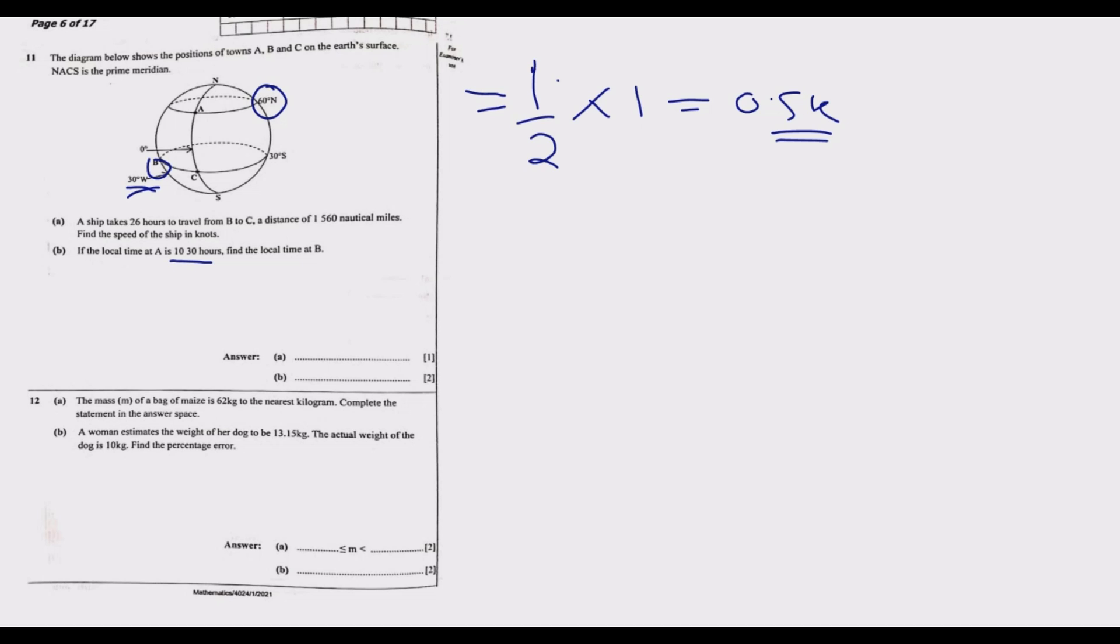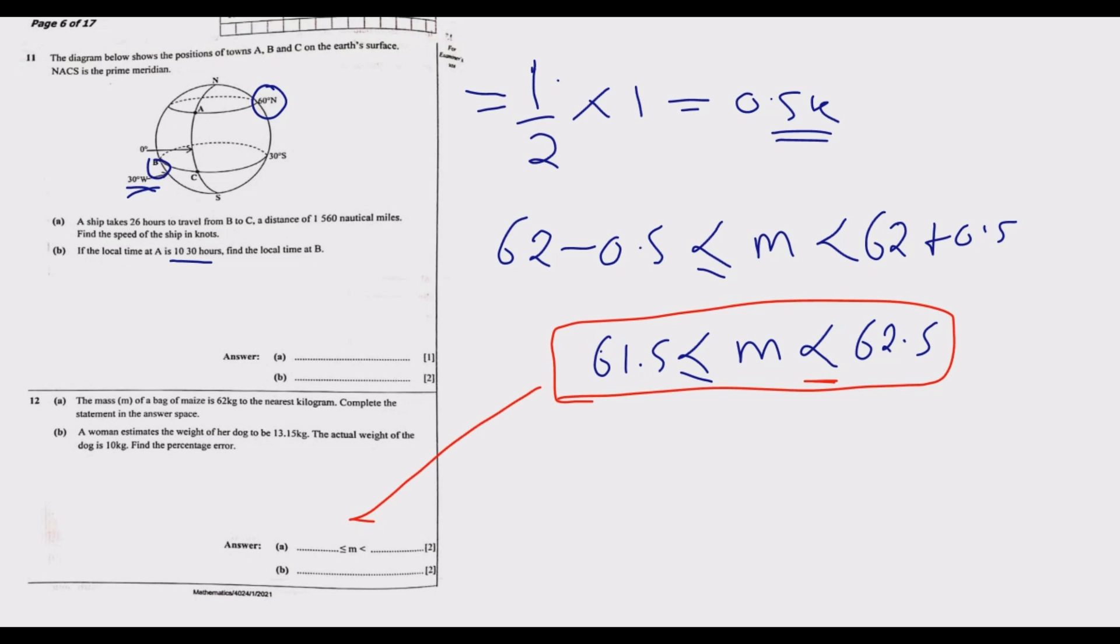To answer part a, we get 62 minus this difference which is 0.5, and 62 plus 0.5. We get 61.5 and 62.5. 62.5 is not part of the region because if you round it off to the nearest one number it would be 63, hence we are not including the equal part here. But 61.5 if you round it off to the nearest one number will be 62. So the answer is 61.5 ≤ m < 62.5. Remember to find the absolute error you need half multiplied by the least unit of measurement.